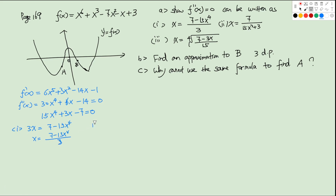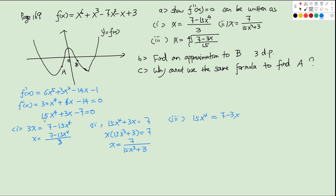For the second form: 15x⁴ + 3x = 7, so x(15x³ + 3) = 7, giving x = 7/(15x³ + 3). For the third form: 15x⁴ = 7 - 3x, so x⁴ = (7 - 3x)/15, giving x = ⁴√((7 - 3x)/15).